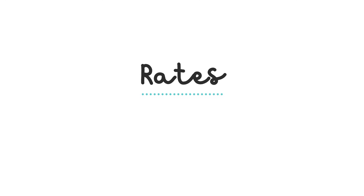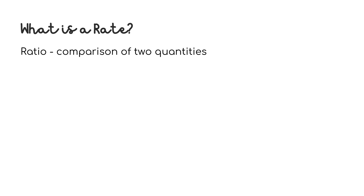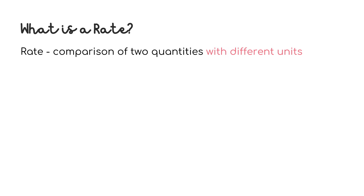So then, what are rates? Remember how a ratio is the comparison of two quantities? A rate is actually a specific type of ratio. A rate is also a comparison of two quantities, but with different units. So before we were comparing boys and girls, where the units of both numbers were people or humans, but with rates, the units of the numbers might be different.